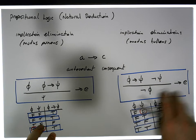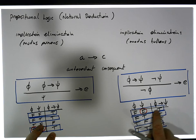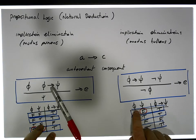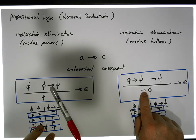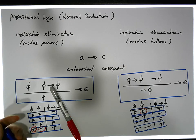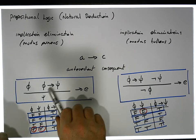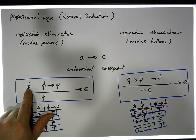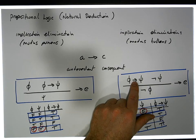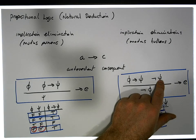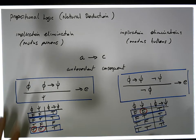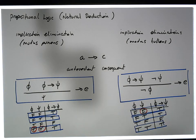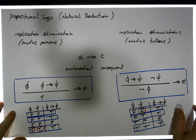The only place where both premises hold — where φ implies ψ is true and the negation of ψ is true — is the first case, where φ is false. So we must conclude that the negation of φ is true. This shows from the truth table why we can eliminate the implication when the negation of the consequent is true. These are two important rules in our natural deduction system.